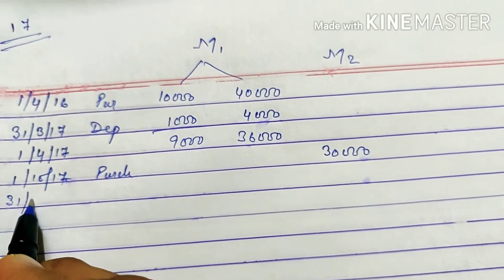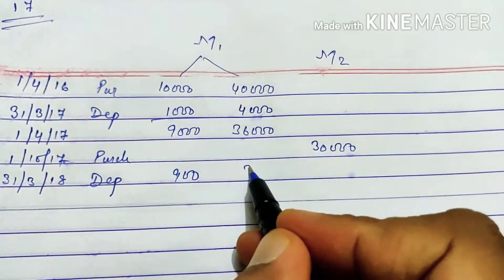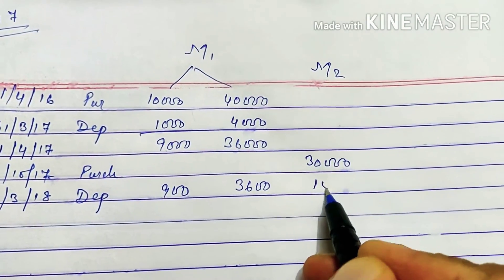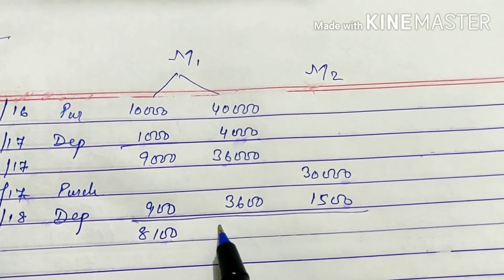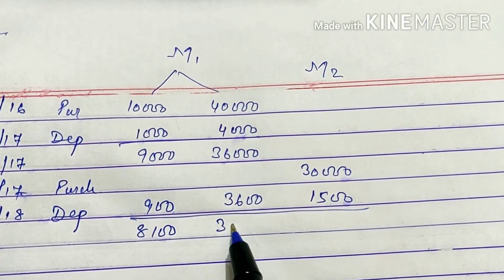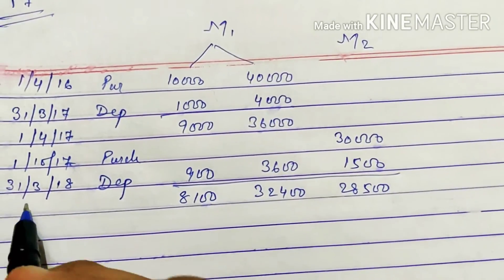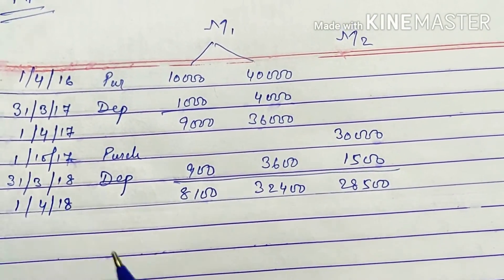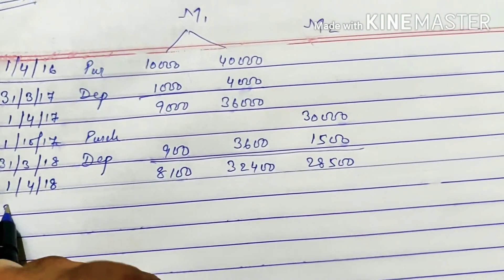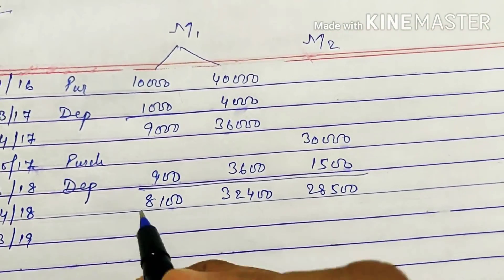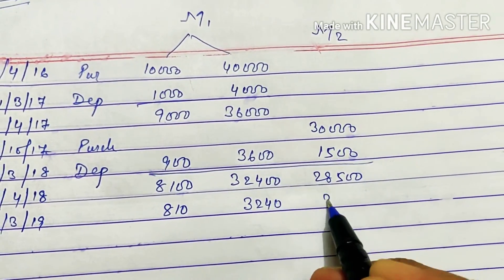On 31st March 2018, depreciation is calculated on all three parts. On the 30,000 machine purchased mid-year, depreciation is for 6 months only, giving Rs. 1,500. The figures come to Rs. 810, Rs. 3,240, and Rs. 2,850 for the respective parts on 31st March 2019 using the diminishing balance method.